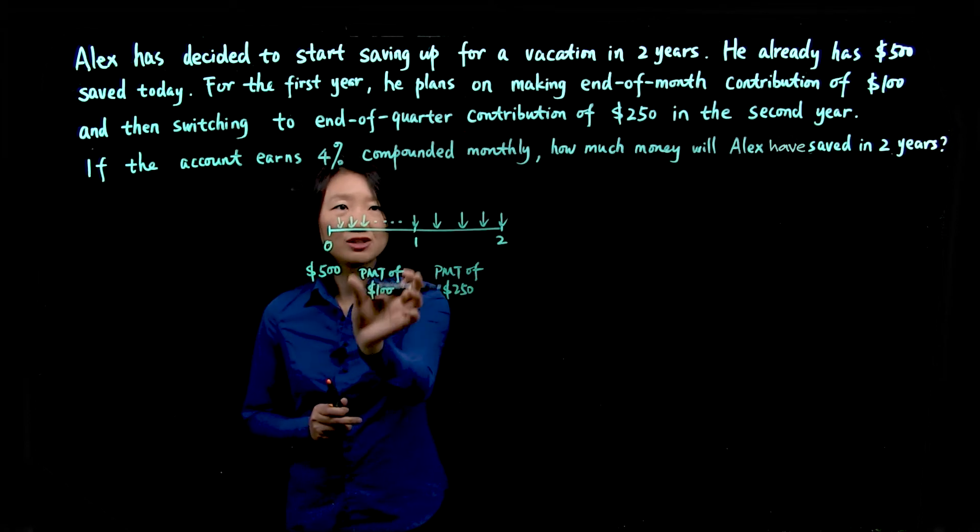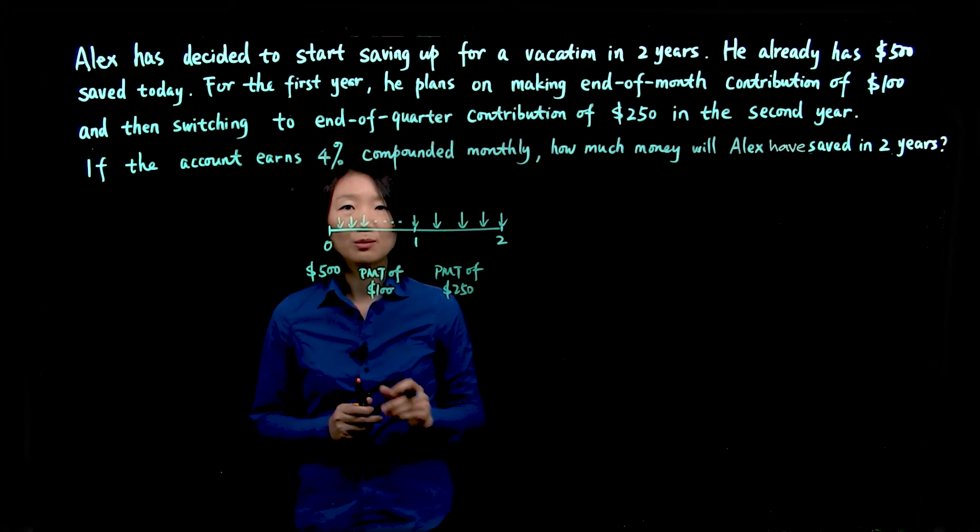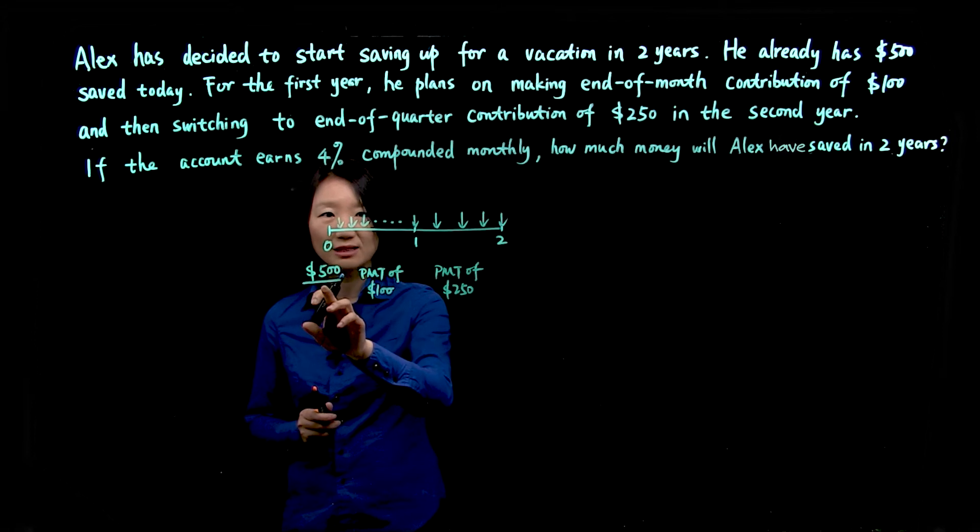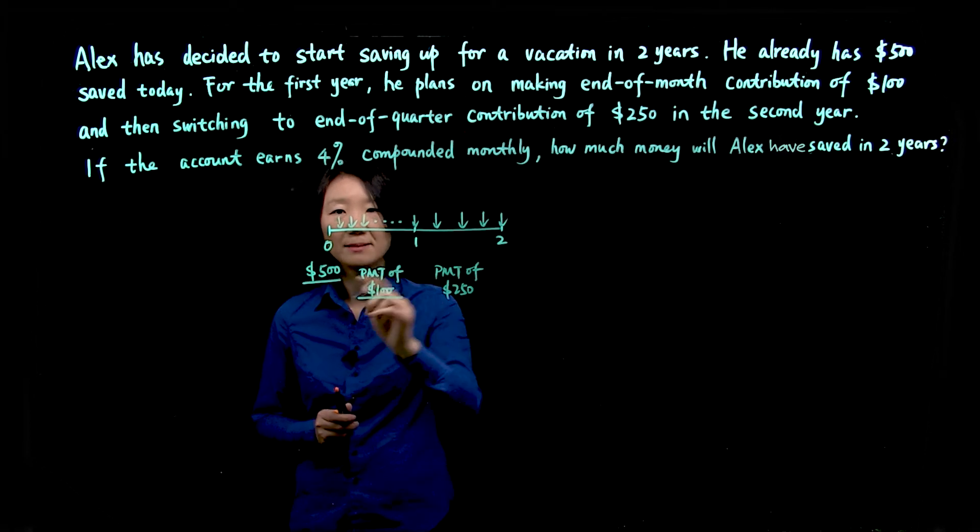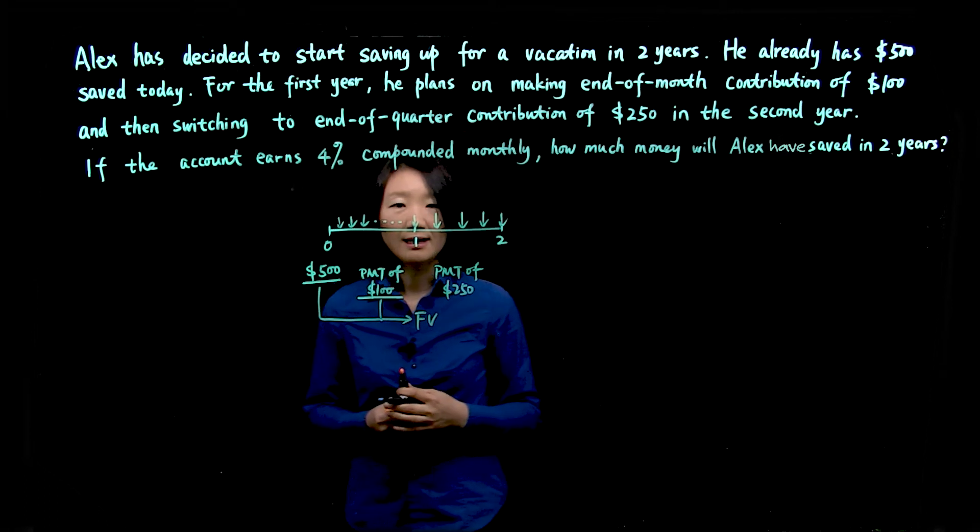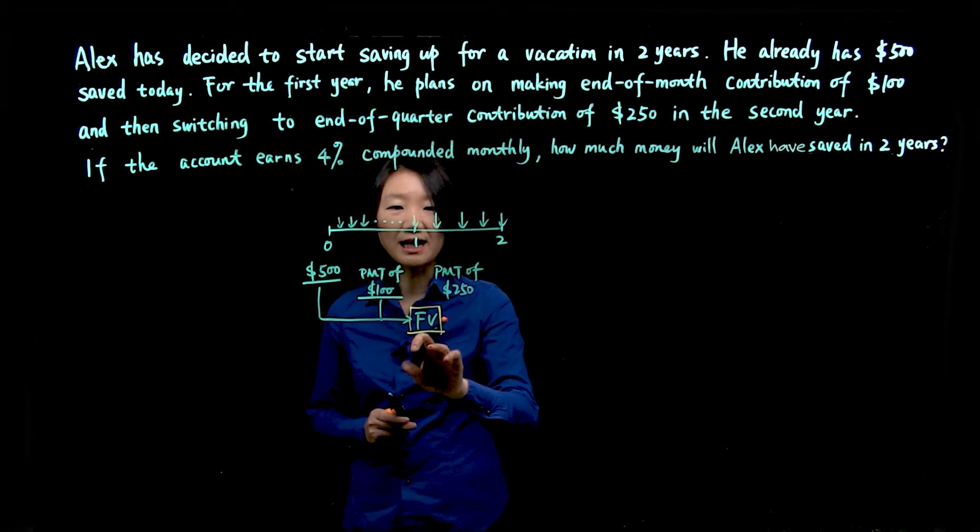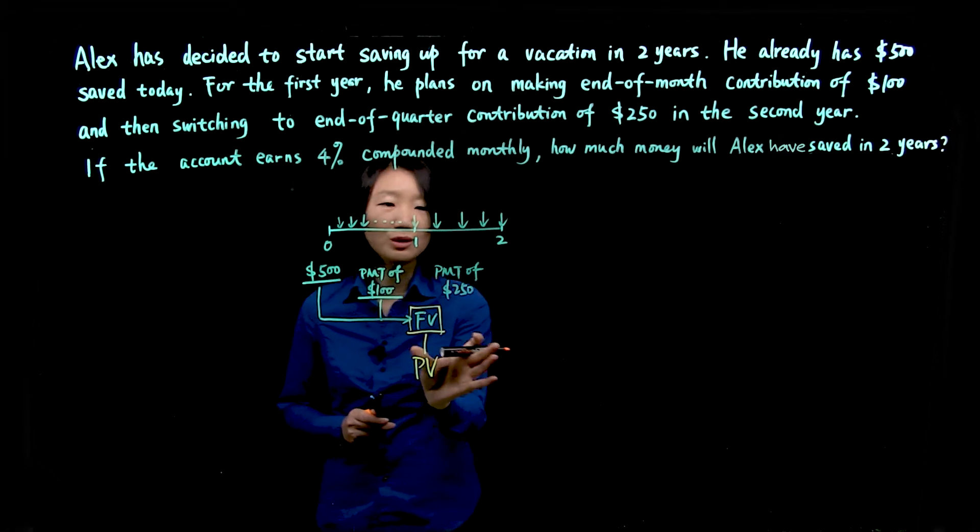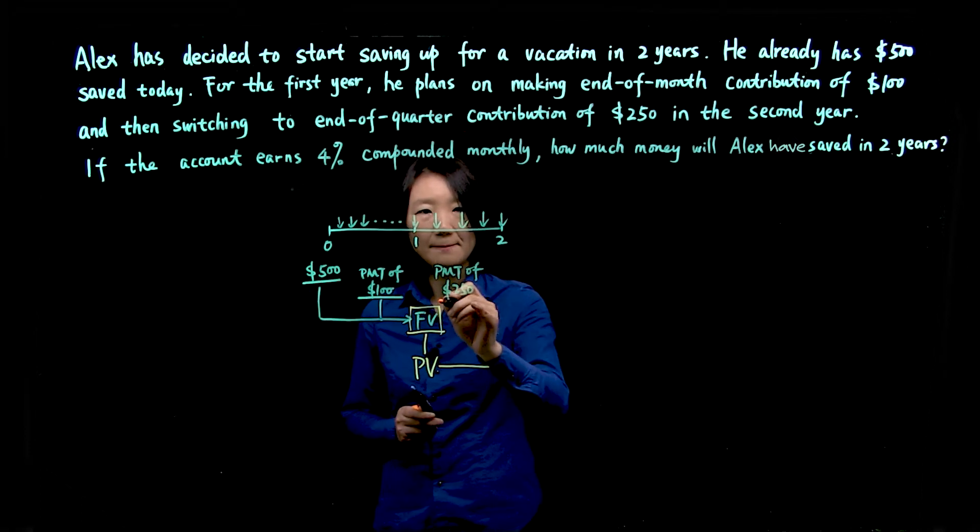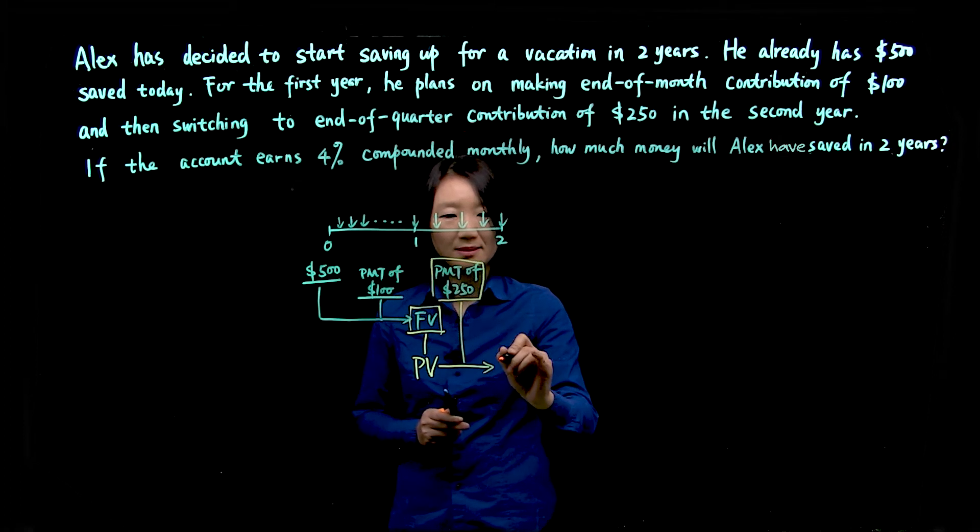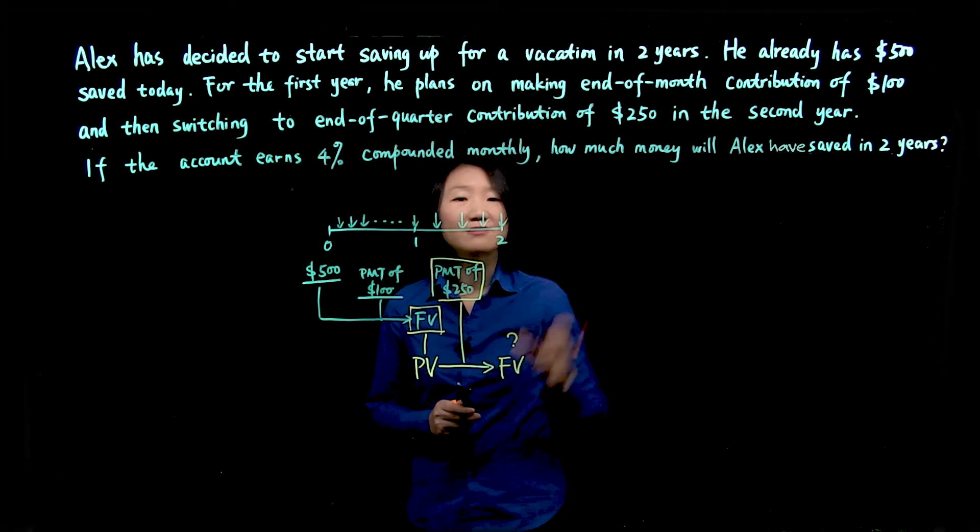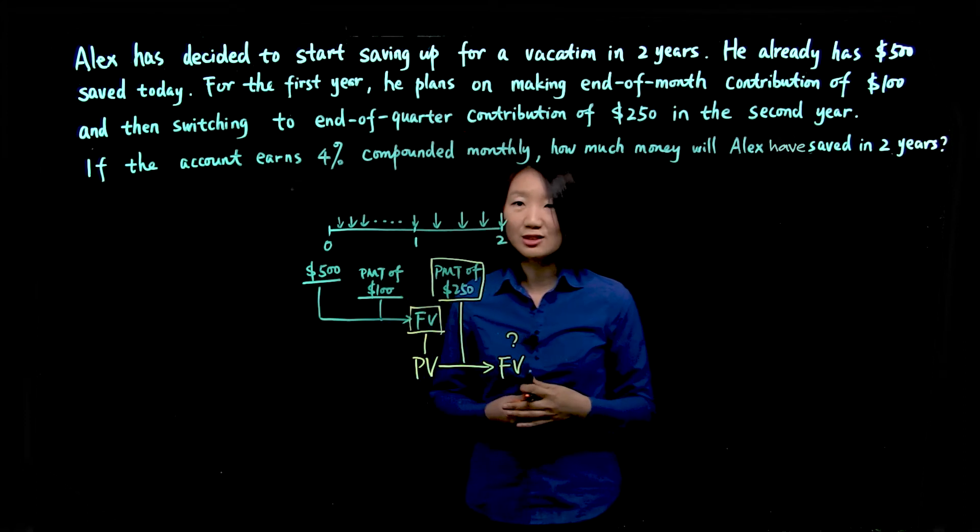Because the periodic payment had changed for year one and year two, we have to look at this problem in two parts. So first part, with the present value of $500 and the PMT of $100 monthly for the first year, we'll need to calculate a future value. And this future value will become the present value when we look at the second year. So the present value, together with PMT of $250, we will calculate a future value. And that is what we're looking for, how much Alex will have saved in two years. Let's look at this question in two steps.